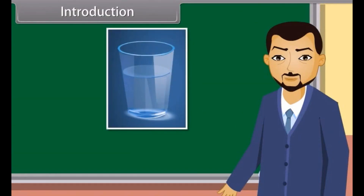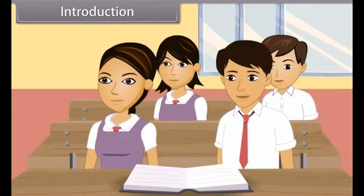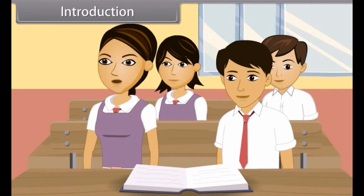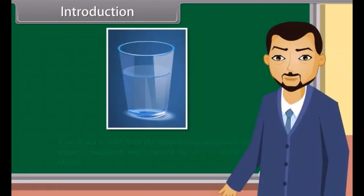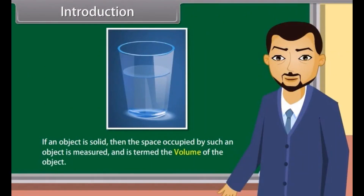This is a glass which is half filled with water. We can easily measure the capacity of the glass or volume of water which is contained by the glass. If an object is solid, then the space occupied by such an object is measured and is termed as the volume of the object.